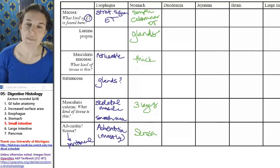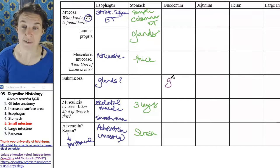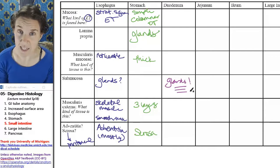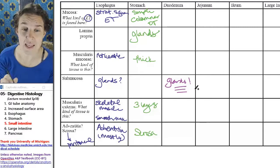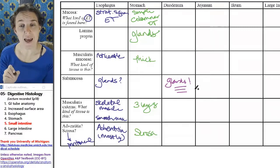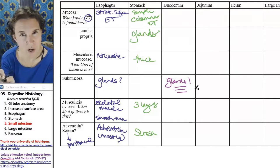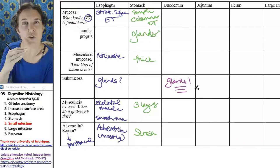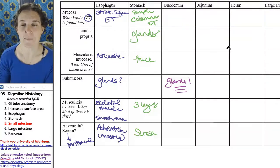The duodenum has an unbelievable number of glands, like crazy glands, like holy glands, like glands everywhere in the submucosa. And what that means is that you're going to have to identify muscularis mucosae in order to be sure that you are actually in the submucosa looking at all those glands.